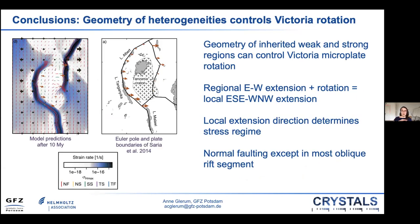Third, the distribution of lithospheric heterogeneities can control the rotation of the Victoria continental microplate in particular. Our model predictions are similar to those from geodetic modeling, where the brown arrows represent the relative velocity of the plate on the right side of the plate boundary. Both sets show an increase in velocity along the Nubia-Victoria plate boundary and increase towards the north along the Victoria-Somalia plate boundary. This microplate motion leads to a clockwise rotation of the local velocity field and can lead to strike-slip faulting instead of normal faulting in the most oblique section of the rift.